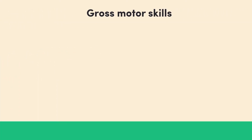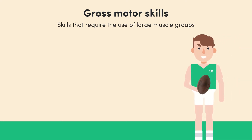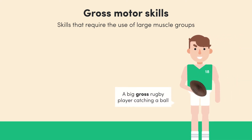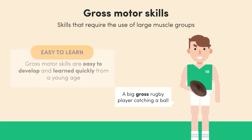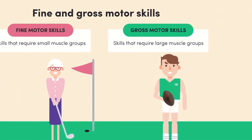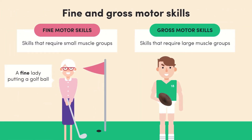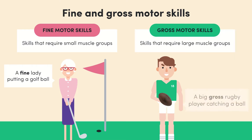Gross skills refer to the use of large muscle groups — usually the arms and legs — for things like running or throwing. Unlike fine motor skills, gross skills can generally be learned more quickly and from a younger age. Just remember: fine skills involve small, precise muscle groups, while gross skills use big muscle groups for more straightforward movements.